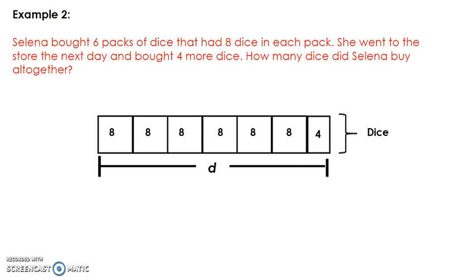Now I will represent the problem with an equation for the strip diagram I just created. I will begin the equation with the variable d followed by the equal sign to represent the total number of dice Selena bought all together. Next I will write six to represent the six packs of dice, followed by a multiplication symbol because she bought equal packs of dice. Then I will write eight to represent the number of dice each pack had. Lastly I need to add four to the product of six and eight to find the total amount of dice Selena bought all together. I now have a strip diagram and an equation to represent the problem.